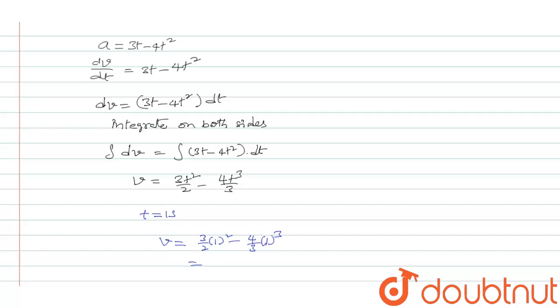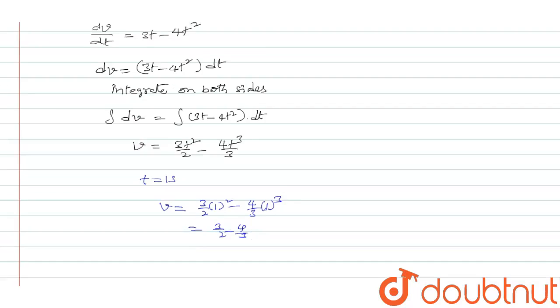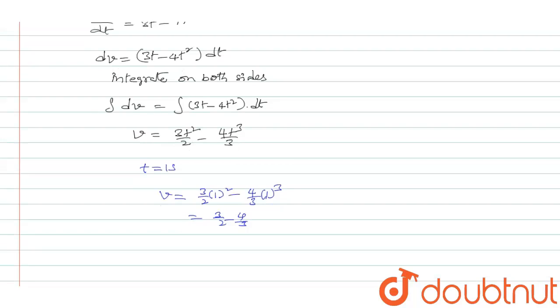This will give you how much here? 3 by 2 minus 4 by 3. I am doing the LCM that is, v is equal to 9 minus 8 by 6. This is equal to 1 by 6. This will give you 0.166 meter per second. This is your answer.